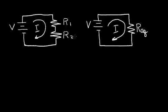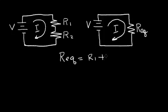I want to find one resistor that I can use to replace two resistors. And the answer is R, the equivalent resistance, is equal to the sum of the two resistors, R1 plus R2.